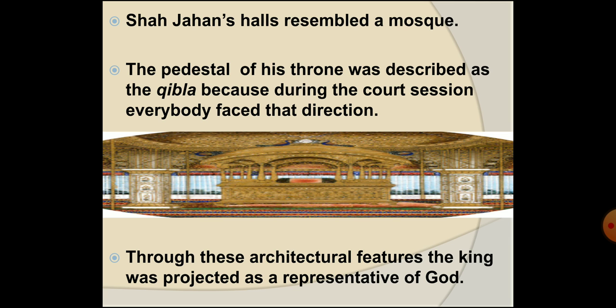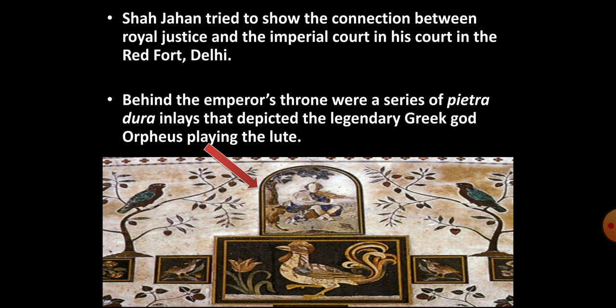These architectural features helped in depicting the ruler as a representative of God on earth. When Shah Jahan got the Red Fort constructed at Delhi, he tried to emphasize the connection between royal justice and the court of the king. In the Red Fort, behind the king's throne, a series of Pietra Dura inlaid materials were placed. Pietra Dura is the term for the inlaid technique of using highly polished colored hard stones to create beautiful ornate patterns.